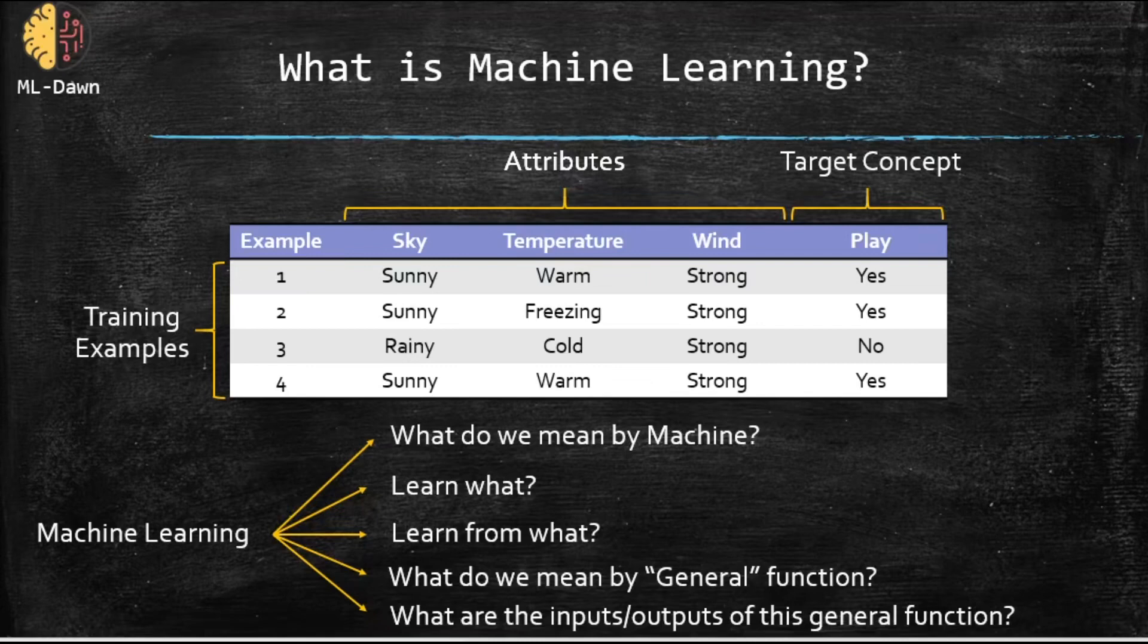Now, learn from what? Question number three, as I said, the machine is going to learn from all the training examples with their corresponding target concept that are all given to the machine. Now, question number four, what do we mean by general function? First of all, what do I mean by function here?